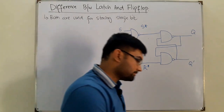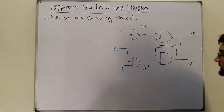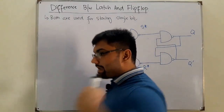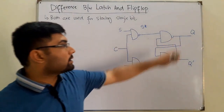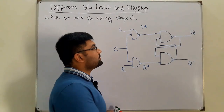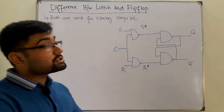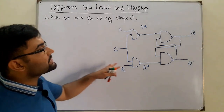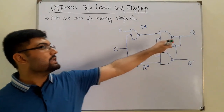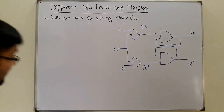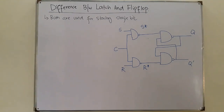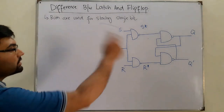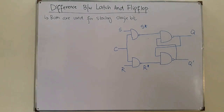To store Q and Q complement, if S or R changes — intentionally or accidentally — the output changes. We can have multiple inputs, and by mistake the output can change. To avoid that, we introduce a control signal which now has the authority to decide when S and R can change the output Q and Q complement.